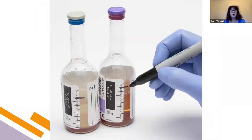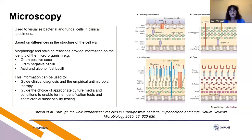In the UK, we use two blood culture bottles per set — an aerobic and an anaerobic bottle — and it's important to put 10 mls of blood into each bottle. It might be a good idea to mark the volume level on the side of the bottle so you can see that you've put enough blood in, because insufficient volume really reduces the sensitivity of testing and you may get false negative results.